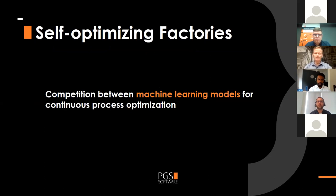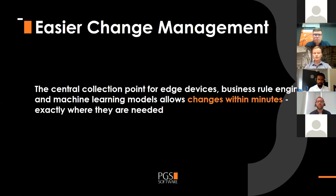Perhaps the most impressive benefit of Mesh Twin Learning is self-optimizing factories. In Mesh Twin Learning, we have this competition between different machine learning models, and it's happening automatically and 24/7. So the system becomes more and more performant over time. The best machine learning models are deployed very often to the whole system, not just a single factory.